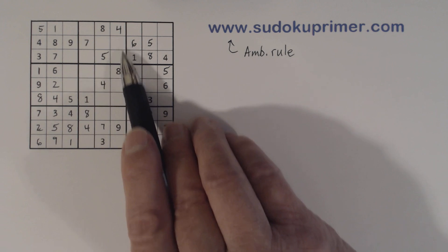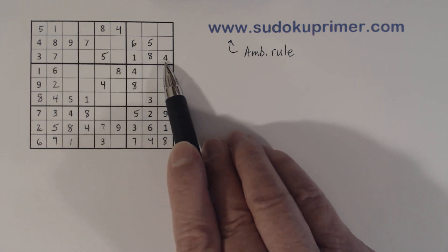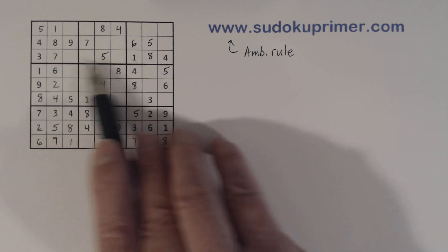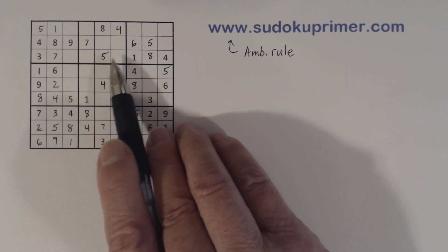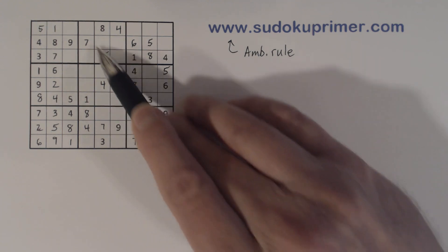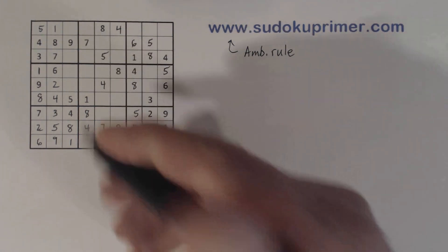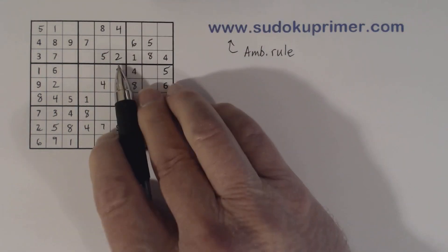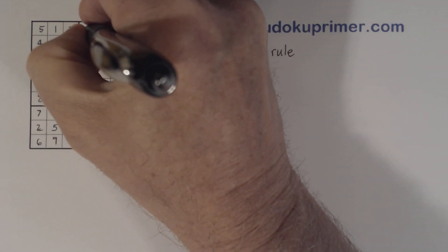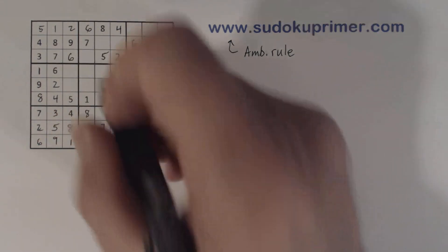That doesn't help us really find which cell the 2 goes in. But let's look at this row — we're missing 1, 2, 5, 6, and 9. This cell is a 2, 6, or a 9. There's a 9 there, and we know the 6 is constrained to one of these 2 cells, so we know that's a 2. Now that we've filled in that 2, we can solve our 2-6 twins there. We can fill in this 6 right there. And we also know that that's a 9.